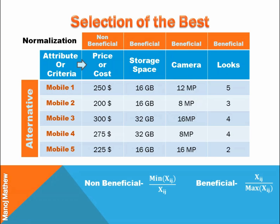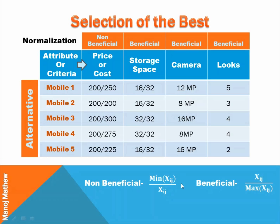In order to make all criteria comparable, we do normalization. For beneficial criteria, we divide the performance value in each cell by the maximum value. For example, in storage space, 32 GB is the maximum value, so we divide each cell's performance value by 32. For non-beneficial criteria, we take the minimum value and divide it by the performance value of each cell. So the key difference is: for beneficial criteria, the maximum value is the denominator, while for non-beneficial criteria, the minimum value is the numerator.